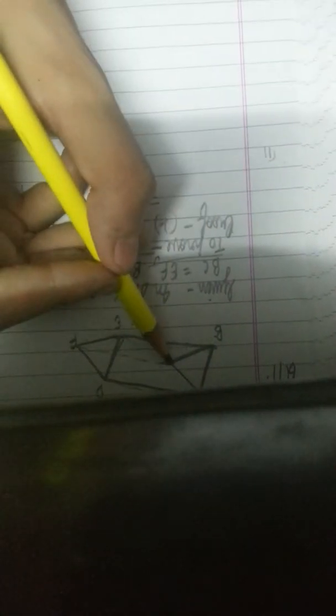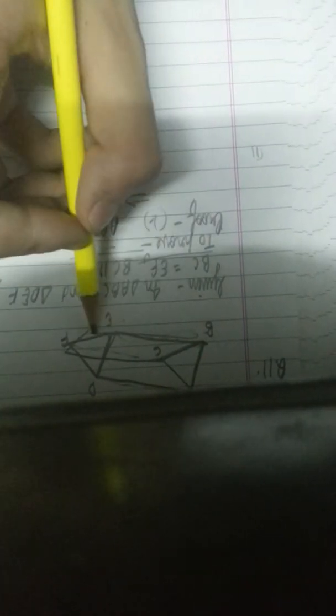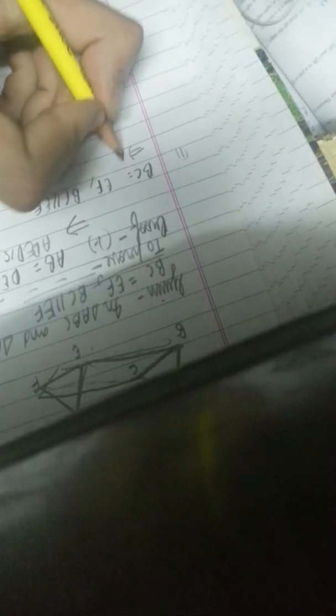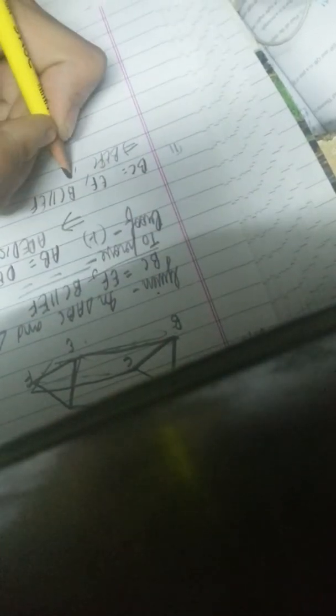After that, in the second part, we have to prove BEFC is a parallelogram. We are given that BC is equal to EF and BC is parallel to EF, so we can directly prove that BEFC is a parallelogram. Moving towards the third part.